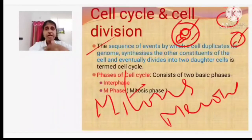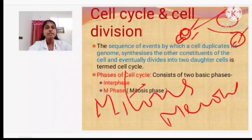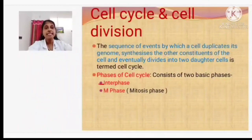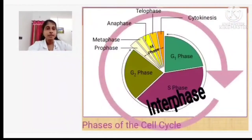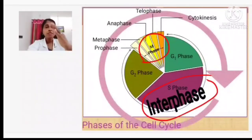Eventually the cell divides and gives rise to two daughter cells — that is what we call cell division. The cell cycle, when it takes place, is divided into two main phases: one is the interphase and the other is the M phase. The interphase is intermediate between divisions.